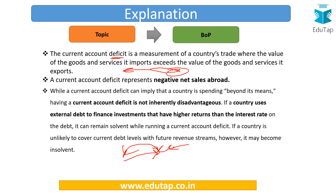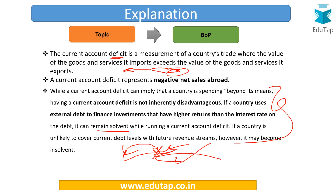Option 4 — reducing export subsidies — was not correct because to improve the current account situation, export subsidies need to be increased, not reduced, so that there are more exports and fewer imports. Also note: current account deficit is not always disadvantageous. A country can use external debt to finance investments that yield higher returns than the interest rate on that debt, in which case the country remains solvent in the long run. However, if the opposite is true, the country may become insolvent.